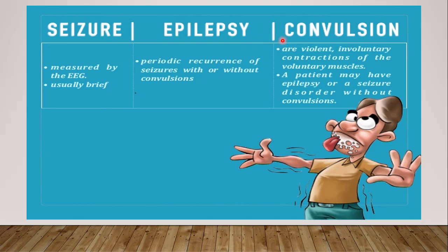To summarize the difference: the smallest is convulsion, then seizure, then epilepsy — epilepsy is the king. A patient may have a seizure without convulsion, which is non-epileptic, and when the seizure is with convulsion, it is epilepsy. Epilepsy is a periodic recurrence of seizures — a group of disorders. A seizure is simply a burst of electrical discharge occurring in the brain.